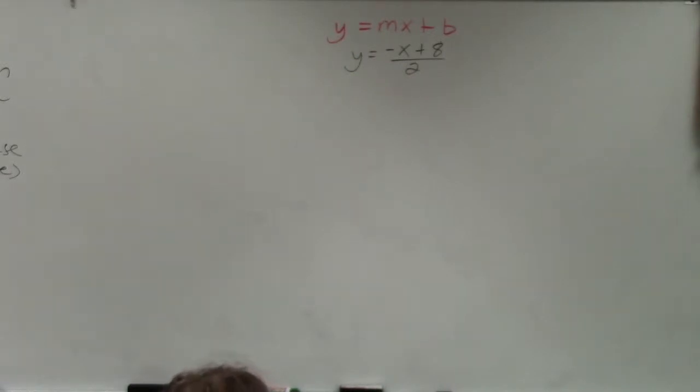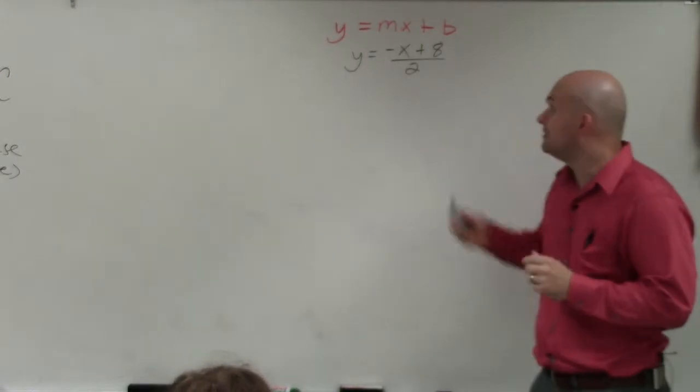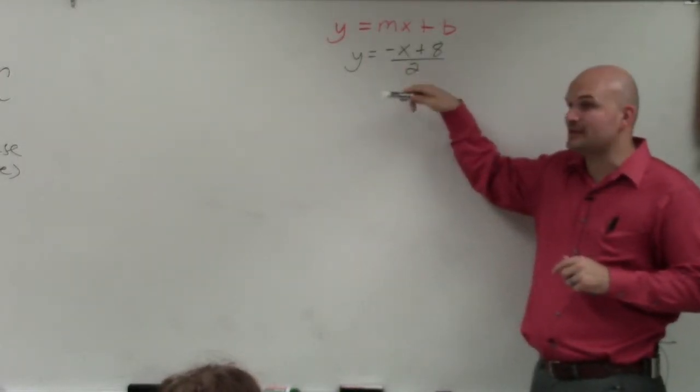Slope and the y-intercept in this equation. Again, we have to rewrite the equation in y equals mx plus b form. So we have the quantity, negative x plus 8, is being divided by 2.